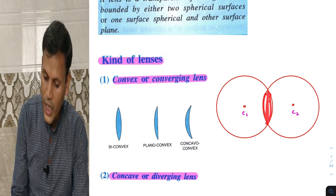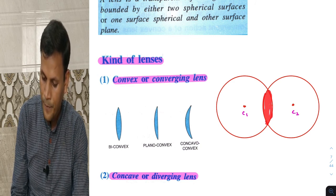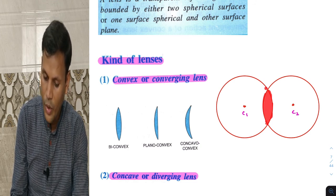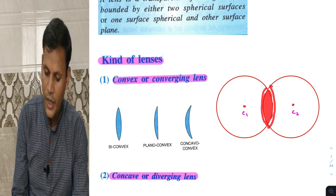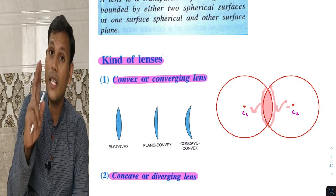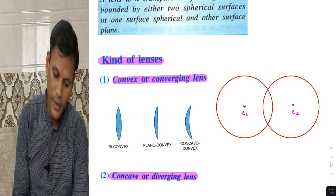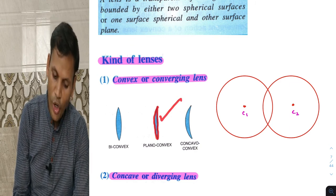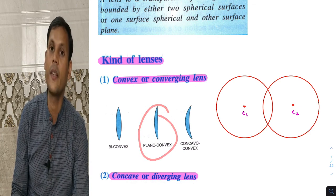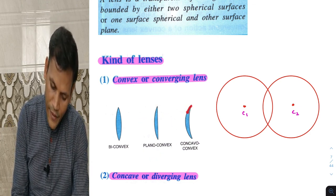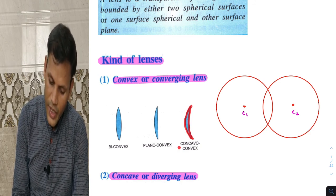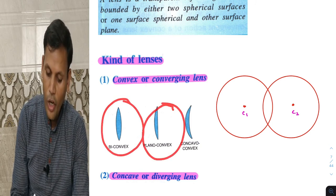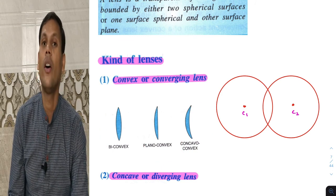This lens has two surfaces that are convex, making it a bi-convex lens. If one surface is convex and another is plane, then it is a plano-convex lens. And if one surface is convex and another is concave, it is a concave-convex lens.